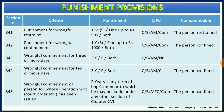Section 345 covers wrongful confinement of a person for whose liberation a writ has been issued — if there is an order to release them but confinement continues, the punishment can go up to two years or under any other applicable provisions of Chapter 16. Under CrPC, the offense is cognizable, bailable, triable by a magistrate of first class, and is a compoundable offense with the consent of the person confined.